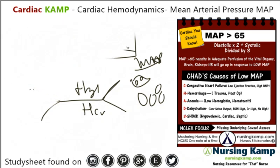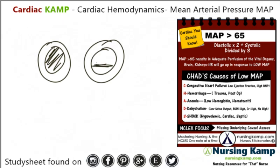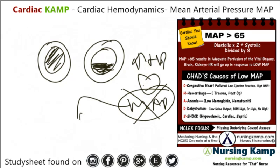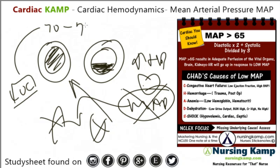Next is dehydration — the D in CHAD's. Just like with blood loss, with dehydration there's just not enough volume. So the same mechanisms happen: increased heart rate. That only works for a little bit, but eventually the mean arterial pressure will decrease. Then the kidneys will shut down and hold on to water to try to restore volume. But you'll see changes in level of consciousness first because the mean arterial pressure will drop. That's why with dehydration, you start to see decreased level of consciousness.